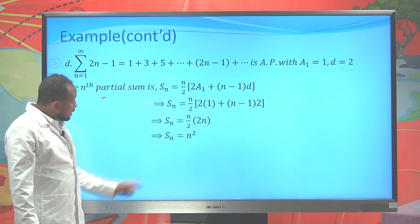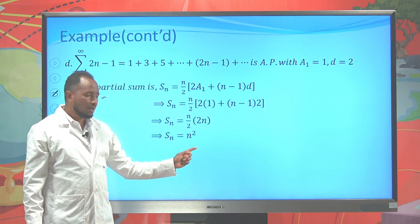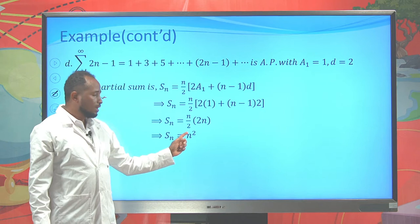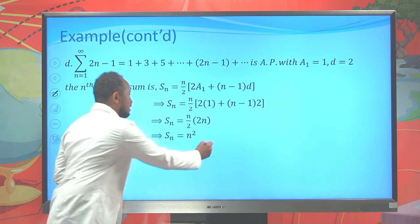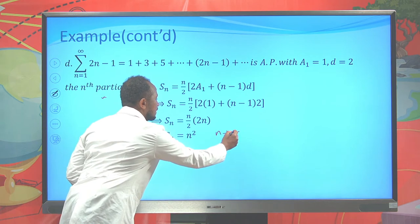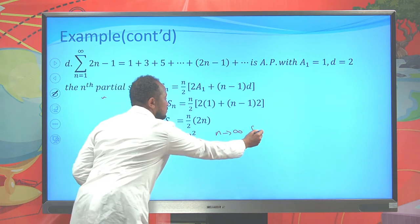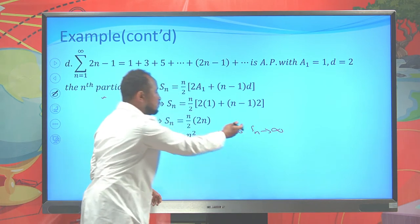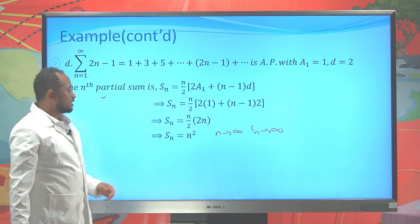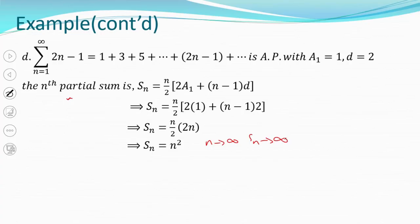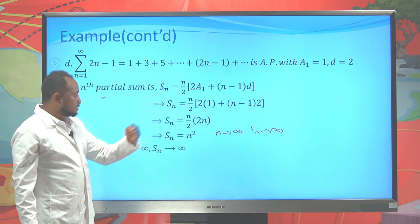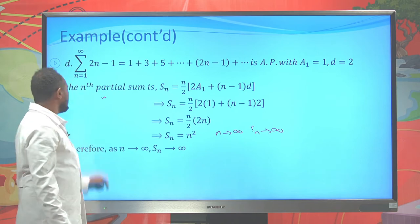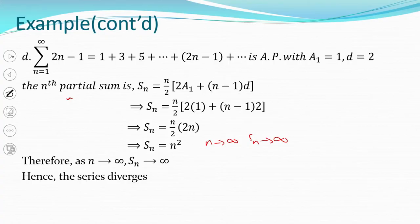As n goes to infinity, n² also goes to infinity, so S_n goes to infinity. Since we did not get a finite unique number, this series also diverges.